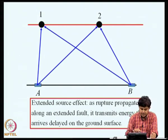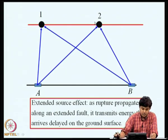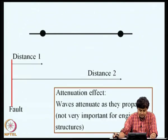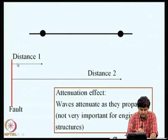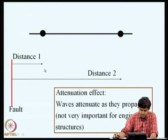The other effect was the extended source effect, because energy gets released along a fault line. The source of energy is an extended line and consequently the energy is released in packets along this line at different time instants. The effect of that is felt at stations 1 and 2 at different times. Waves also propagate through an inhomogeneous medium, where they are scattered, inducing variability in ground accelerations. Attenuation effect refers to the decay of waves as they travel through the earth's medium, and this effect is not as crucial for land-based engineering structures compared to the other three effects.